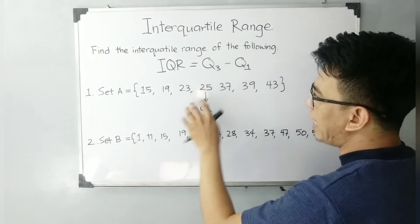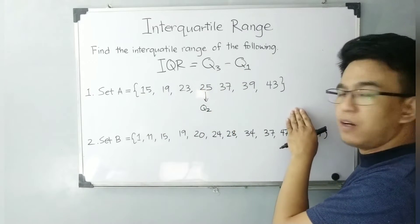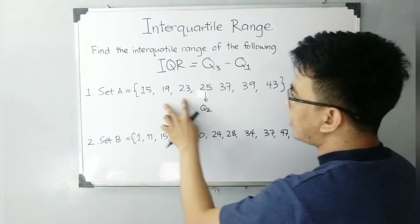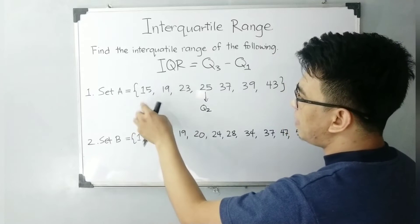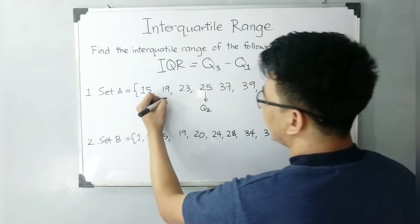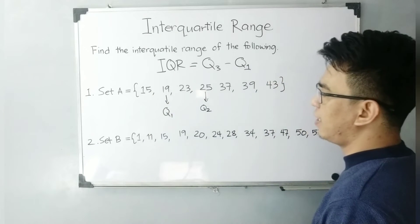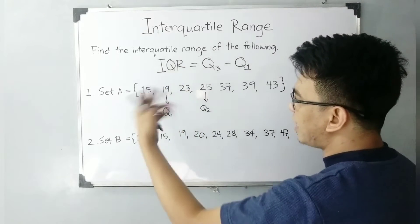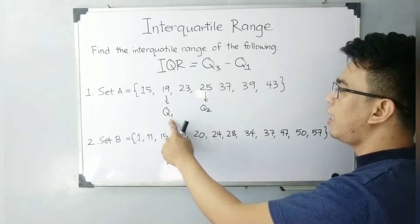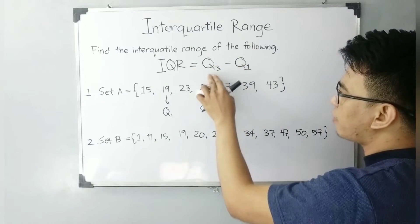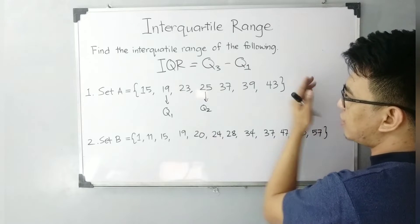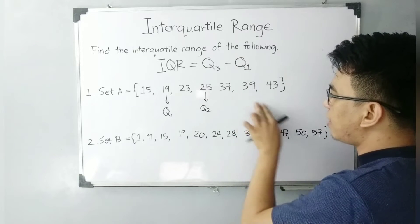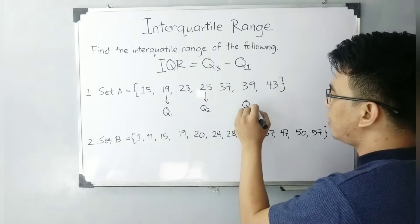Since this is your median, we have the lower half and the upper half of your given data set. To find your Q1 or quartile one, get the average or the median of your lower half. Since you have one, two, and three elements, get the middle of these three elements and that is 19 — that will be your quartile number one. For quartile number three or upper quartile, go to the upper half: 37, 39, and 43. It also has three elements, and the second element in your upper half is your third quartile, which is 39.